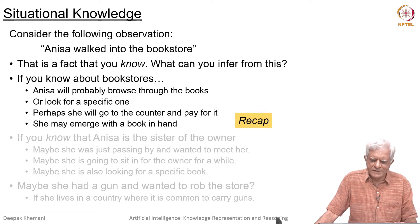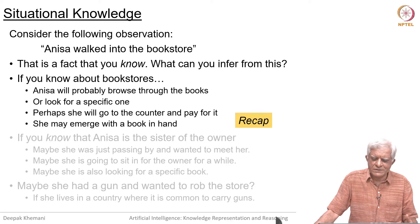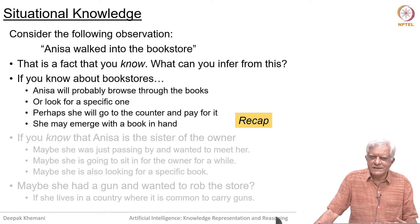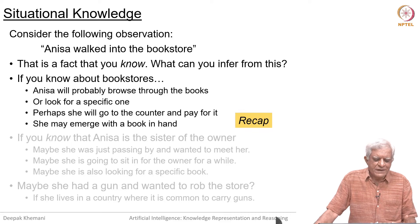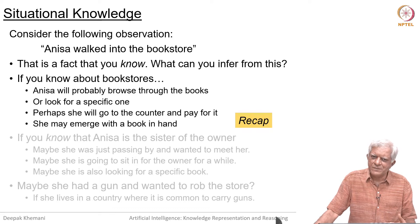This is a recap of what we have said much earlier: if you are hearing a story or a sentence — for example, 'Anissa walked into a bookstore' — then you generate certain expectations as to what is happening there. That is because you know what a bookstore is and what happens inside a bookstore. You can make inferences like Anissa will probably browse through the books, or maybe she is looking for a specific book, and perhaps she will go to the counter and pay for it and emerge with a book in hand.